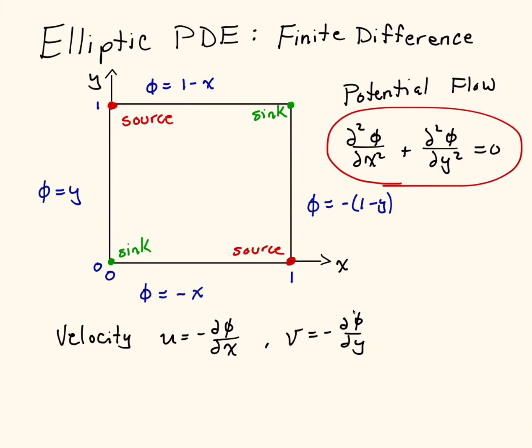The source and sink are described by the boundary conditions given. So φ on the left side is y, φ on the bottom is minus x, φ on the right is minus 1 minus y, and φ on the top is 1 minus x.